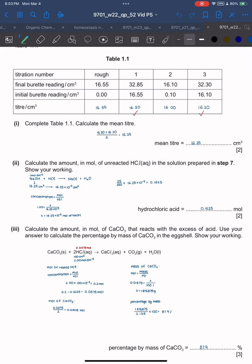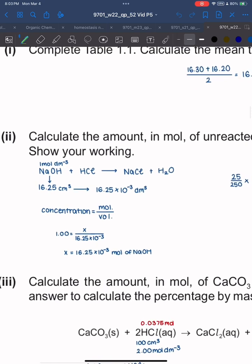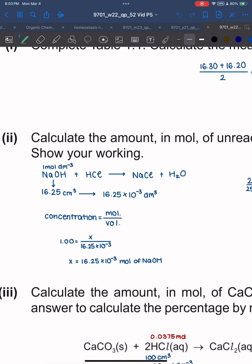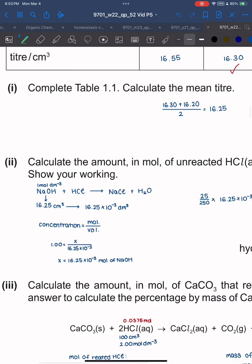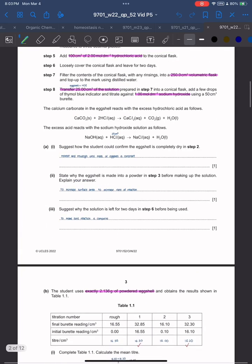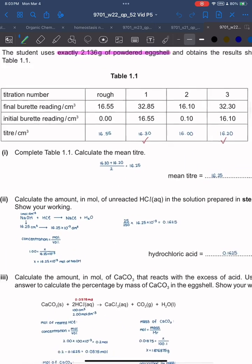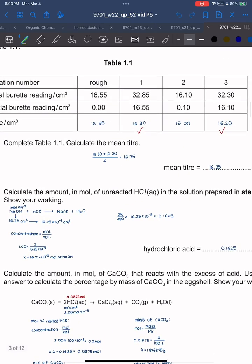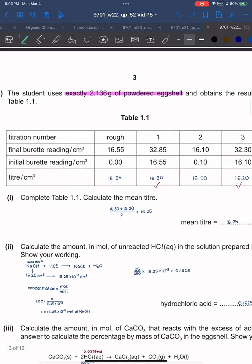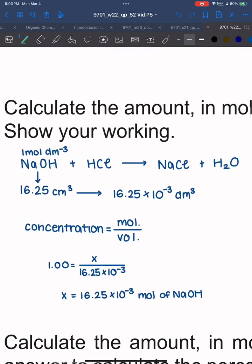Calculate the amount in moles of unreacted HCl in the solution prepared in step 7. I've copied the equation there. The NaOH is 1.00 mol/dm³ and you're using 16.25 cm³.